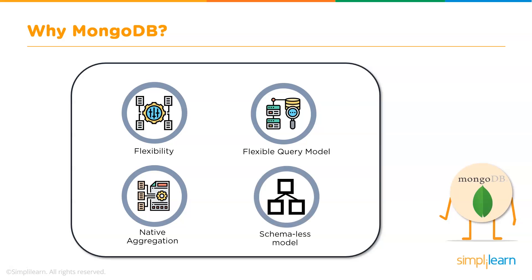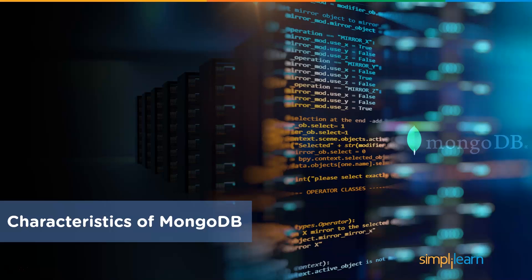Lastly, as mentioned earlier, the schema-free model. Applications get the power and responsibility to interpret different properties in different ways. Now that you know what MongoDB is and why it's used, let's have a look at the characteristics of MongoDB.